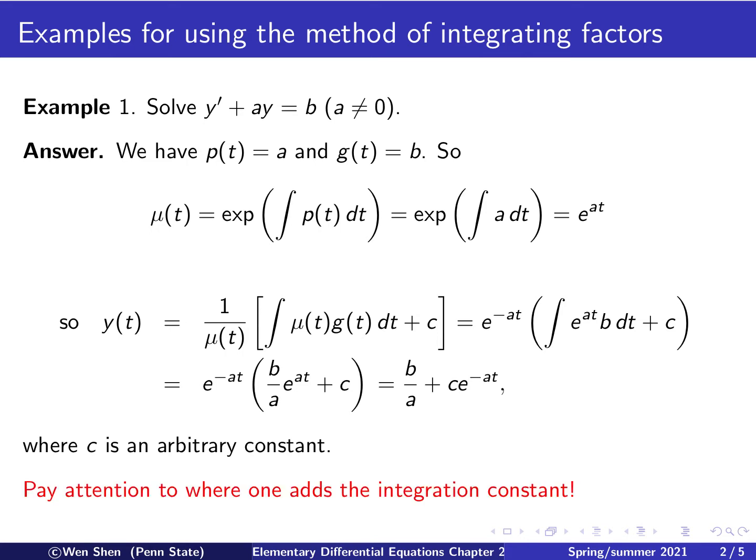Finally, I would like to catch your attention to the position where we add the integration constant. The c goes into this bracket, and 1 over mu(t) is multiplied outside. So in the end, the c times inverse of mu would occur in the solution. That's all for this example, let's move on to the next one.